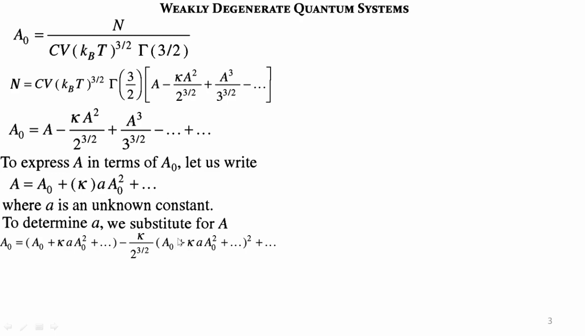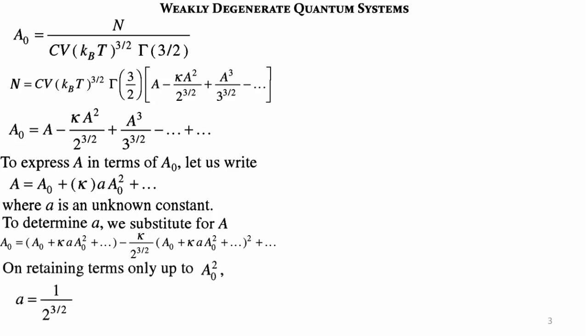Collecting terms of order a₀² and requiring the equation to be satisfied, the coefficient of a₀² must be zero. This gives the value of the unknown coefficient: α = 1/(2^(3/2)). Therefore the fugacity can be written as a = a₀ + κ·a₀²/(2^(3/2)) to second order.